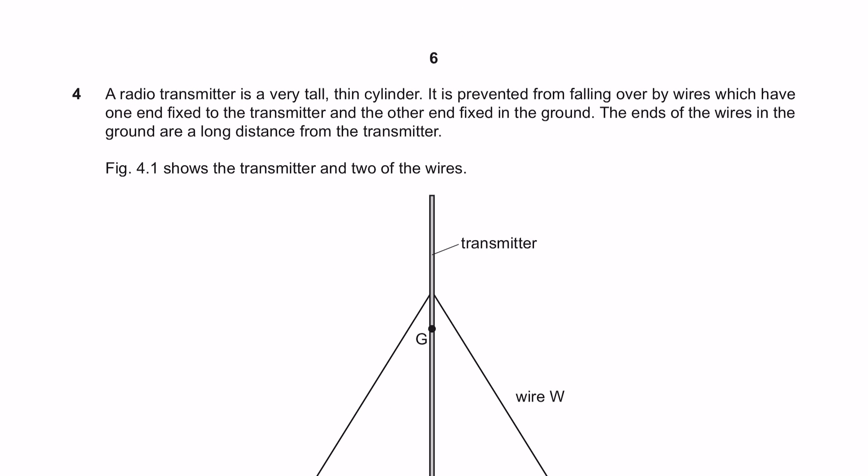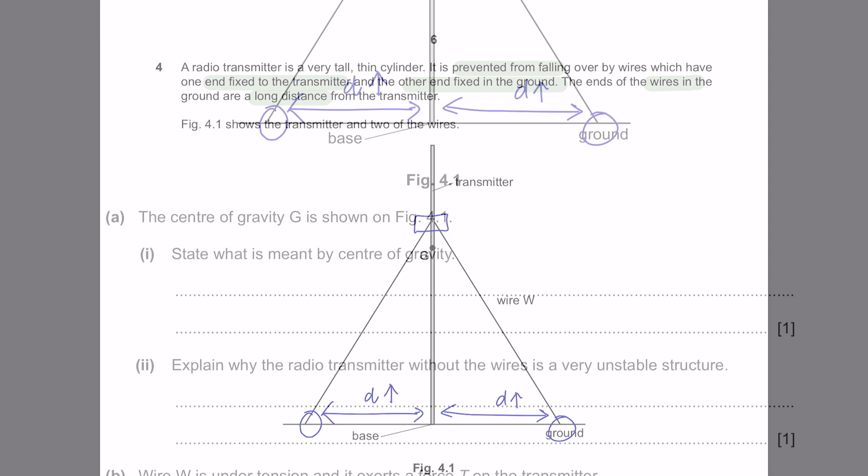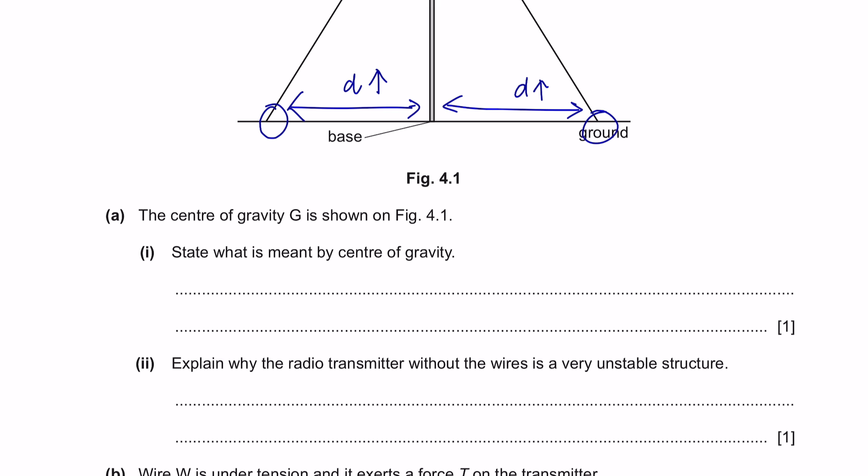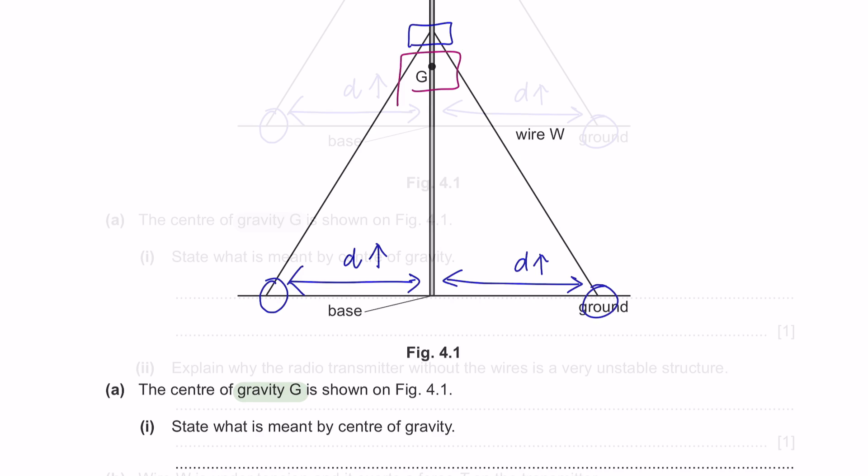Question 4. A radio transmitter is a very tall, thin cylinder. It is prevented from falling over by wires which have one end fixed to the transmitter, over here, and the other end fixed in the ground, here and here. The ends of the wires in the ground are a long distance from the transmitter. Question A. The center of gravity G is shown in figure 4.1. So, here you have the center of gravity. Part 1: State what is meant by center of gravity.